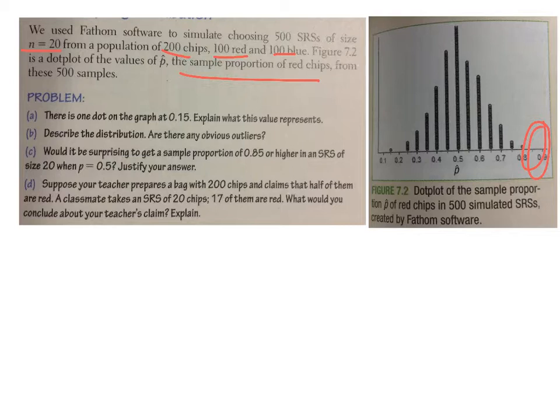Part D: suppose your teacher has a bag with 200 chips and claims half are red. A classmate takes an SRS of 20 chips and 17 of them are red. What would you conclude about the teacher's claim? That would put p-hat up at 0.85, so I would conclude the teacher probably lied — P is probably not equal to 0.5, because that's a very unlikely sample to pull.